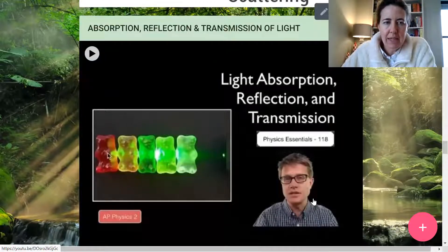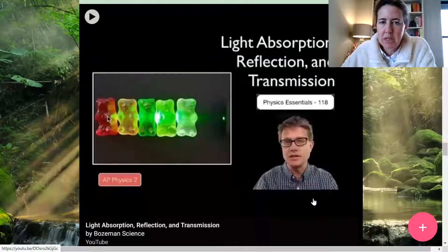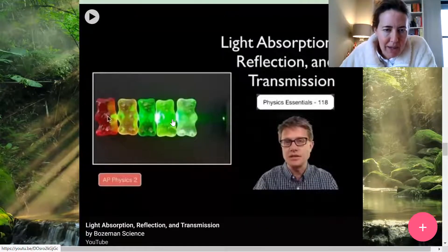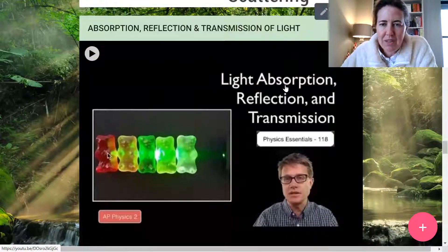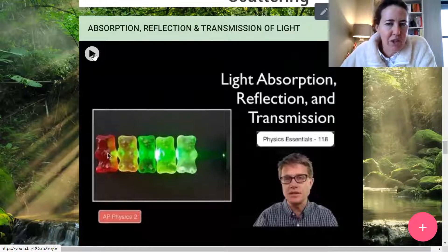Scattering happens when the light that came in then travels in a different direction when it goes out. I would like you just to have a listen to this as well, which explains really nicely with gummy berries, how and what's the difference between absorption, reflection, and transmission.